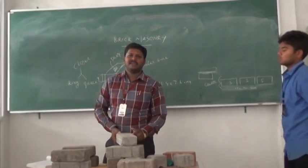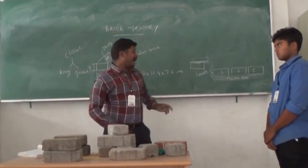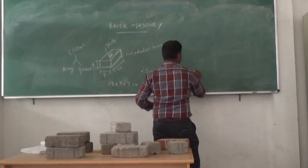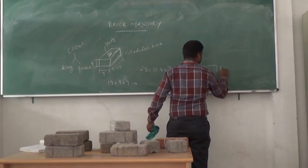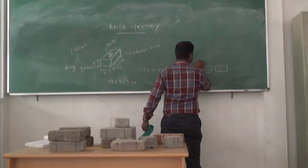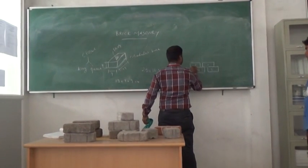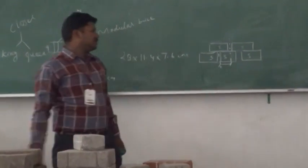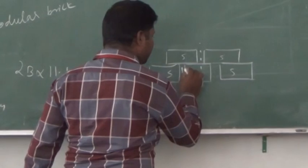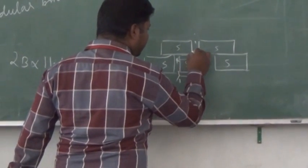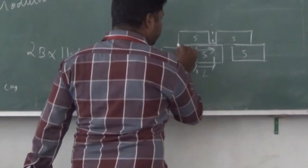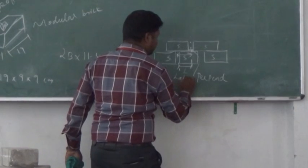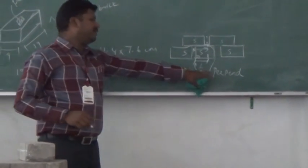Next we go to the lap. The lap is the horizontal perpendicular distance between the vertical joints of adjacent courses. The horizontal distance is called the lap, and the vertical joint alignment is called the perpend.